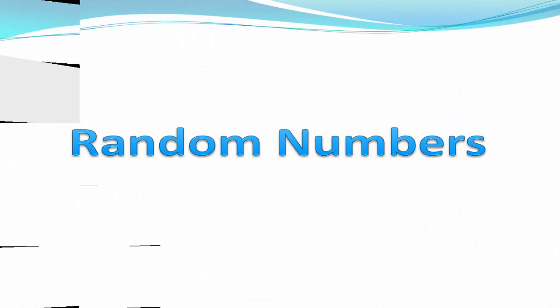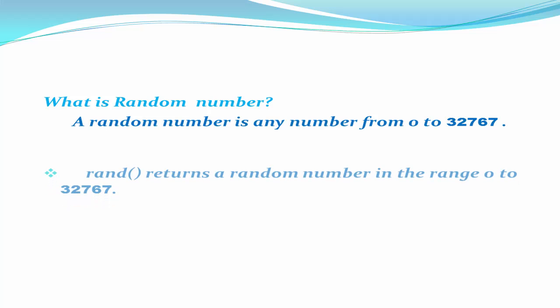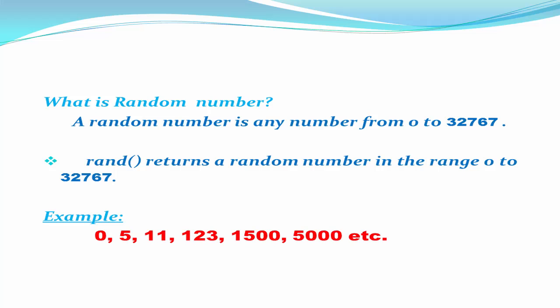First, let's understand what a random number is. A random number is any number from 0 to 32,767. To generate a random number, we use the RAND function. RAND function returns a number in the range 0 to 32,767. For example, 0, 5, 11, 123, 1500, and 5000 are all random numbers.